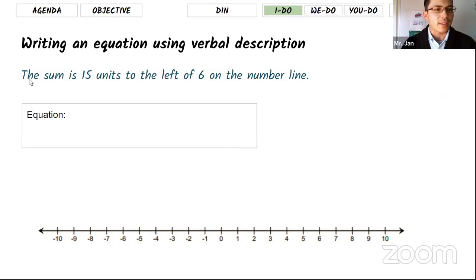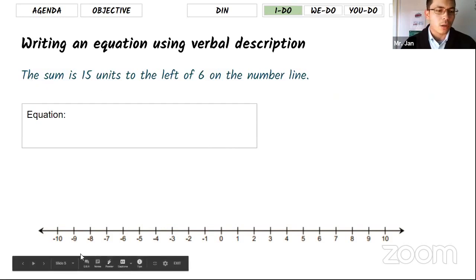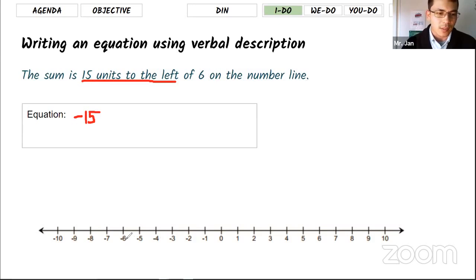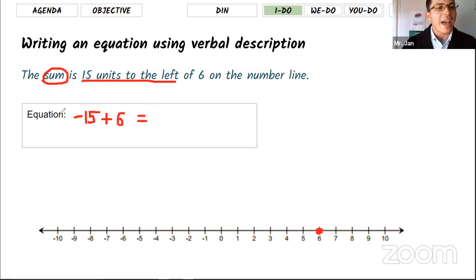When you read a verbal description, always pay attention to keywords. For example: 'the sum of 15 units to the left' — because it says 'left,' it's going to be negative 15. 'Of six on the number line' means you locate positive six. When you add two numbers, it doesn't matter if you flip the order, so even if you add six with negative 15, the result would be the same.